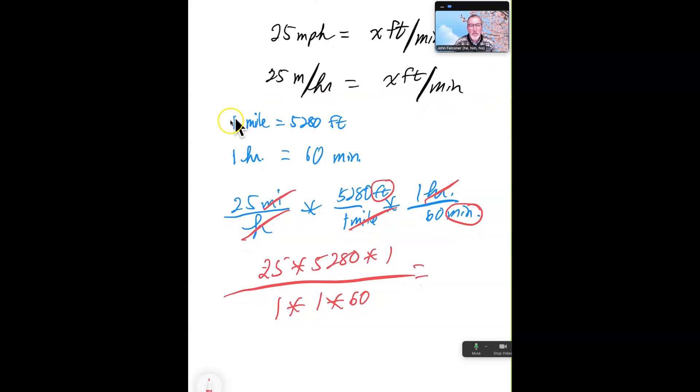We're going to convert them using a number of feet per mile. So we have this one mile is 5,280 feet and one hour is 60 minutes. So we're going to set these up.